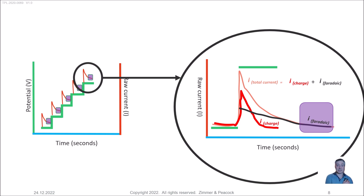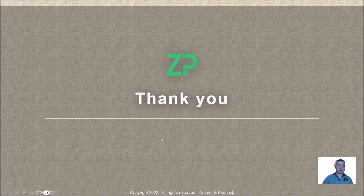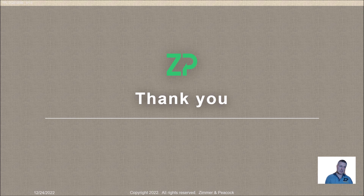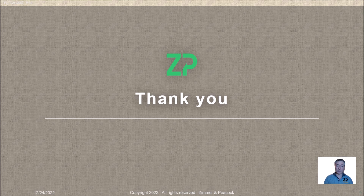Modern potentiostats do stepwise voltage changes, and the way they sample means they try to miss that charging current and give you mostly the Faradaic current. This was a quick video on charging current as a phenomenon in analytical techniques — it appears in both amperometric and voltammetric experiments. If you'd like me to talk about charging current in techniques like square wave voltammetry or differential pulse voltammetry, I'd be happy to do so. Please like, subscribe, and ask questions in the comments so we can generate more videos. Thanks very much — take care, bye-bye.